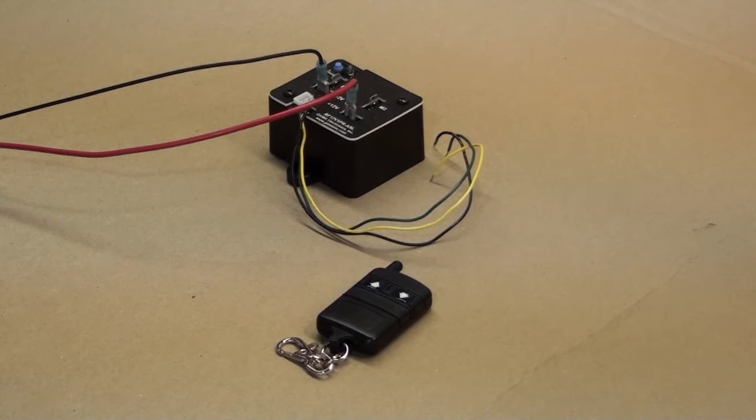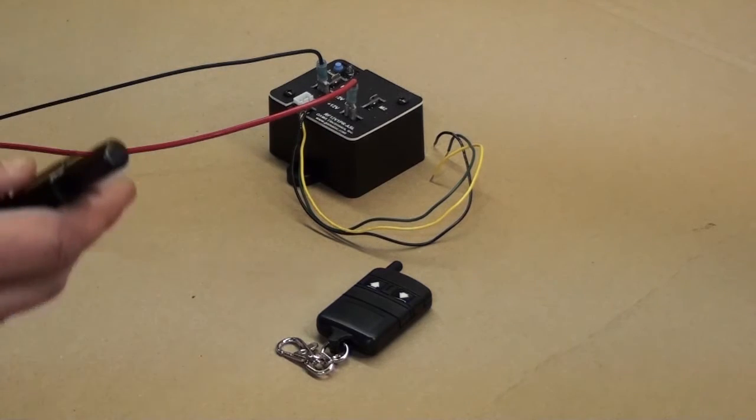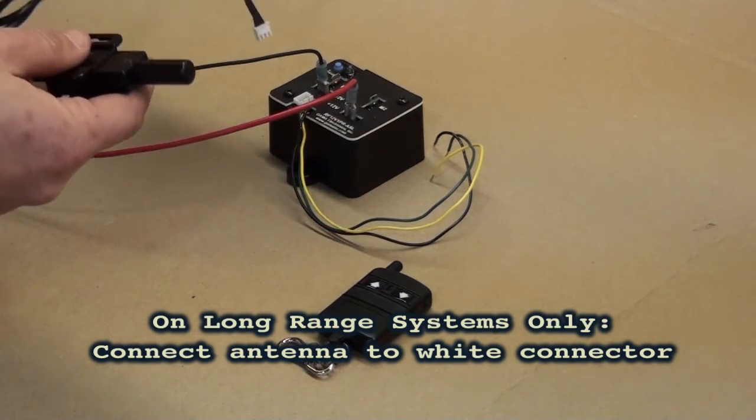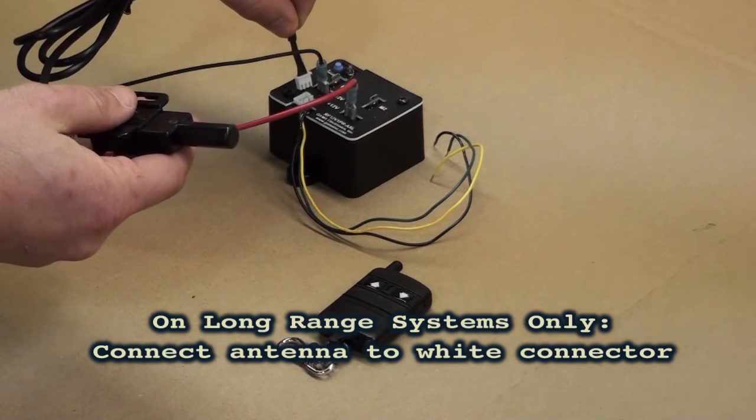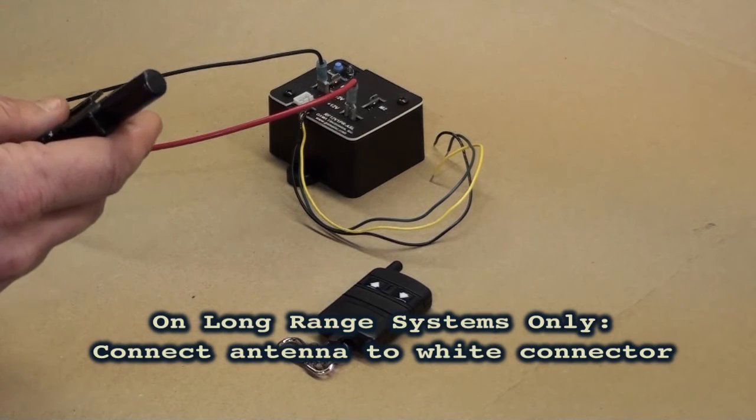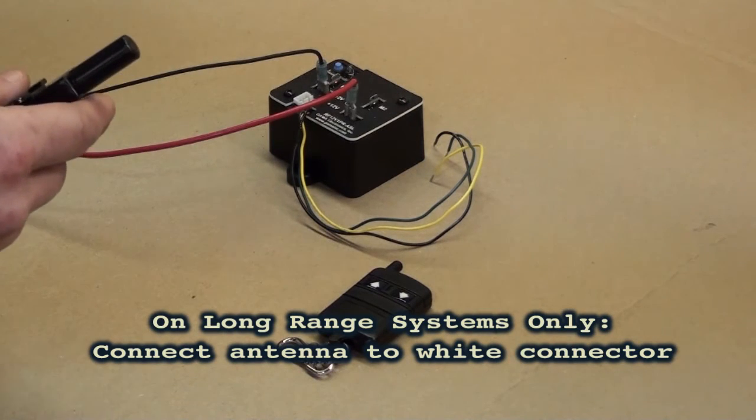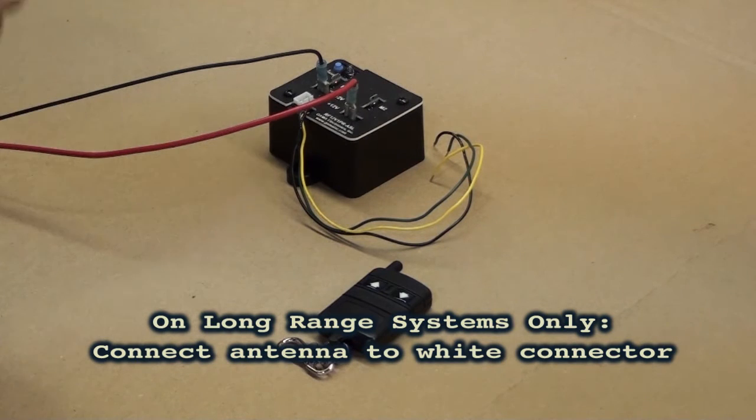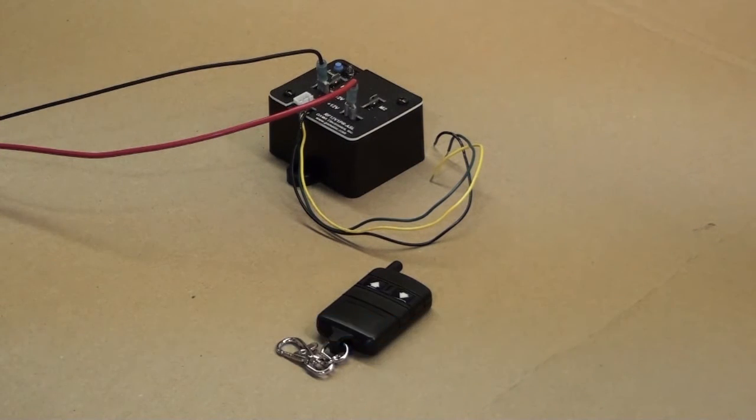If you have purchased a long-range unit, you will have been supplied a long-range antenna. This antenna must be plugged into the white connector on the receiver. If you do not connect the antenna to the receiver, the receiver will not accept a program and will not work. The unit we're working with today is not long-range and does not require a long-range antenna.